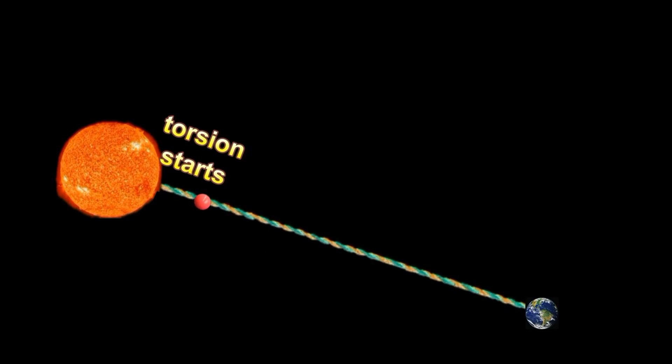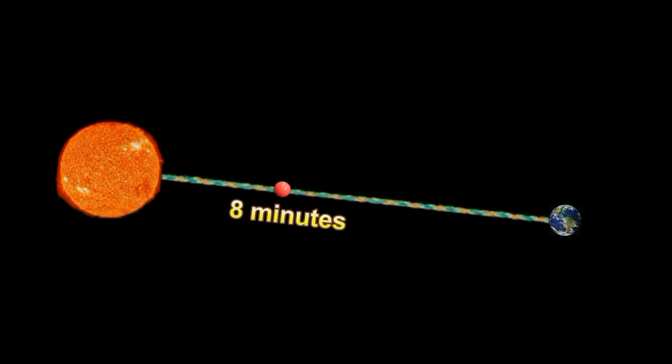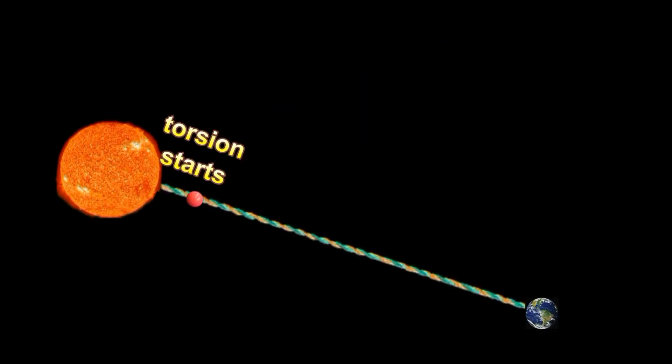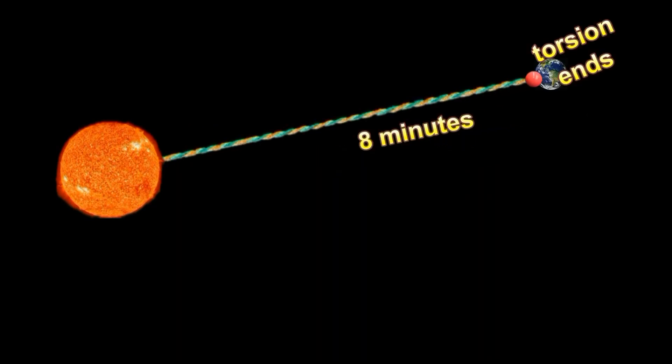Despite the enormous speed in which the torsion signal propagates along the electromagnetic rope, it nevertheless takes about eight minutes for this three-dimensional disturbance to reach the Earth, simply because the sun is so far away.